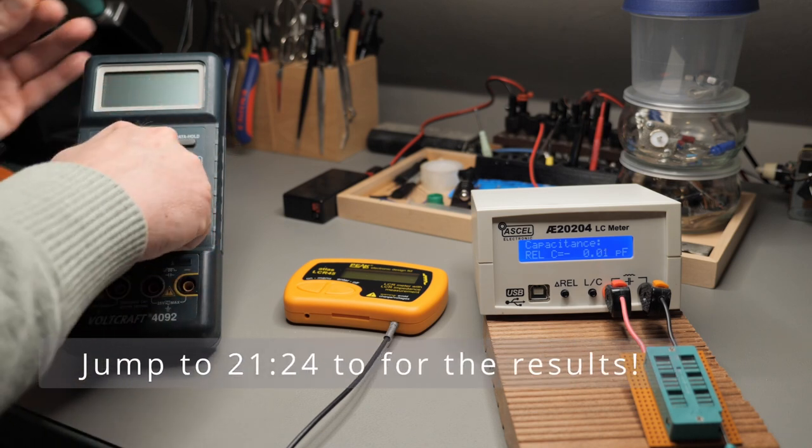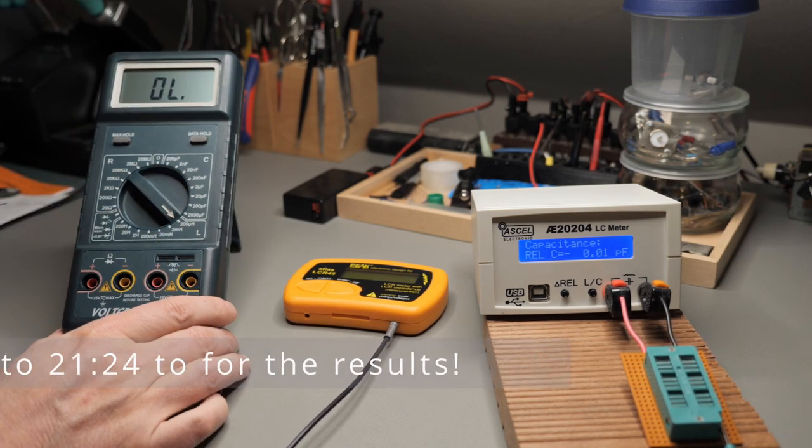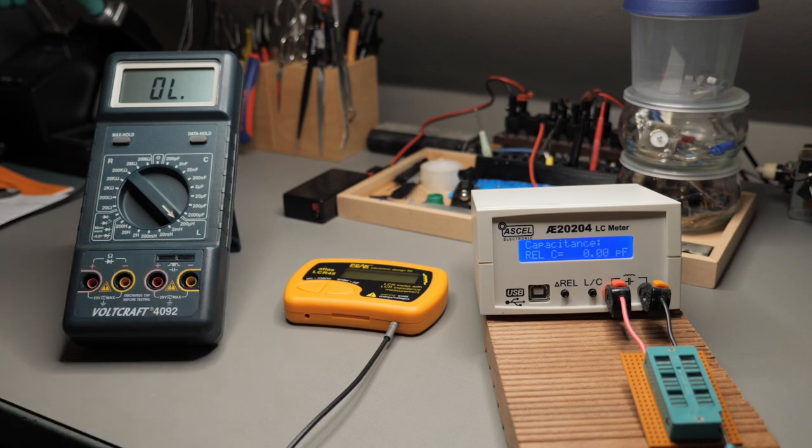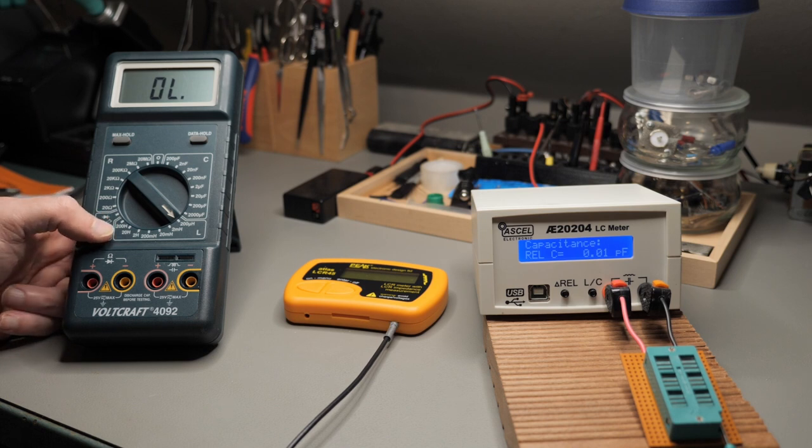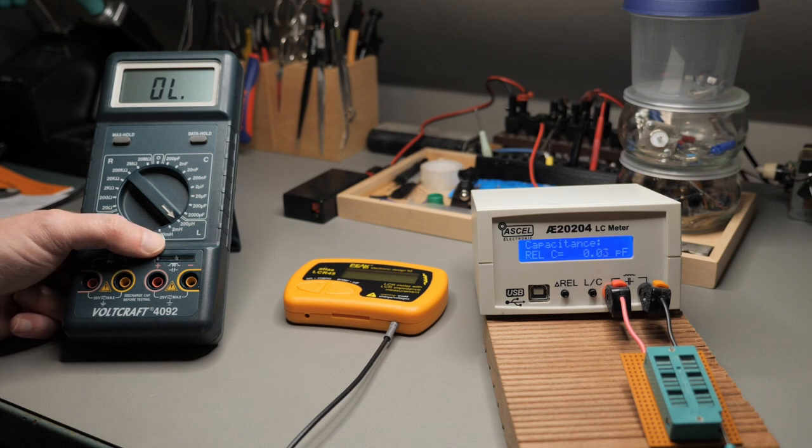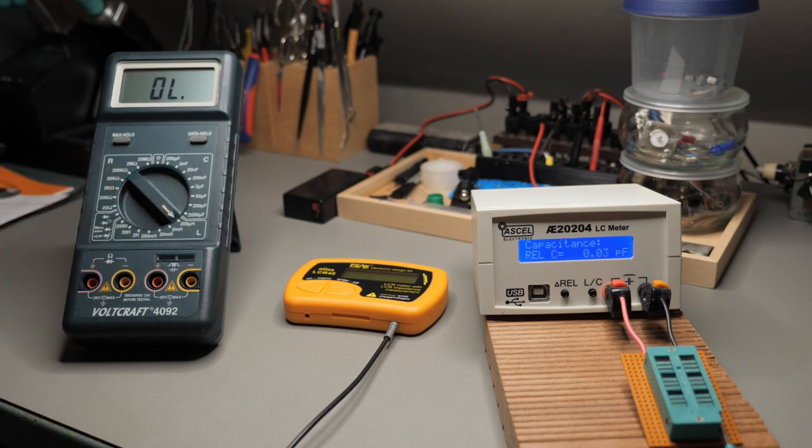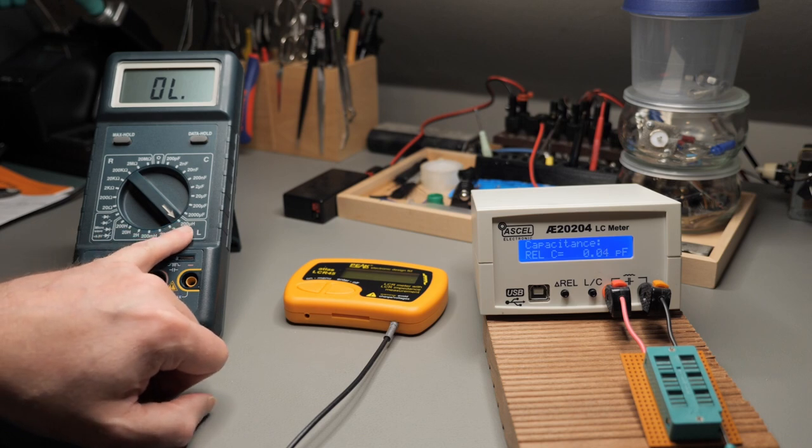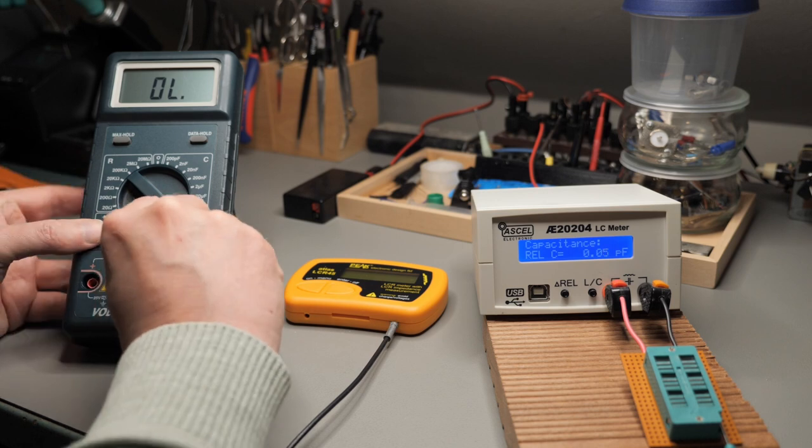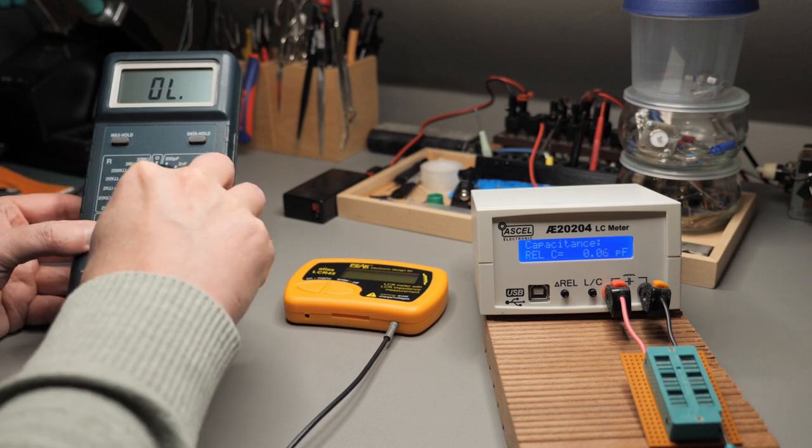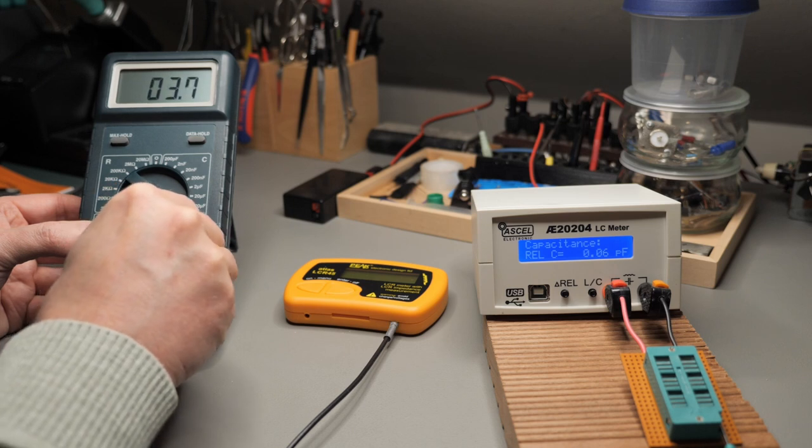Let's start here on the left side. Set the Voltcraft device to 200 microhenry. I think it has a really completely useless range for measuring inductance. You can choose between 200 henry, 20 henry, 2 henry, 200 millihenry, 20 millihenry, 2 millihenry and then 200 microhenry. So basically I guess for our purposes the 200 microhenry is the only useful one.